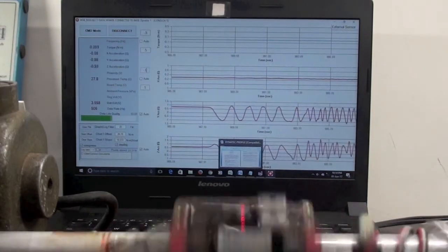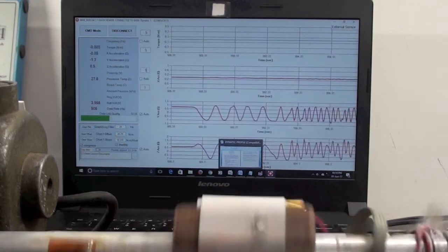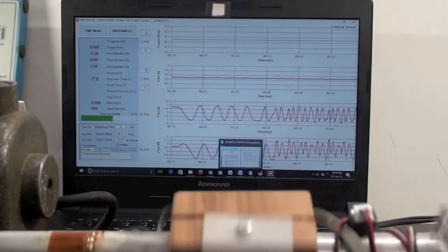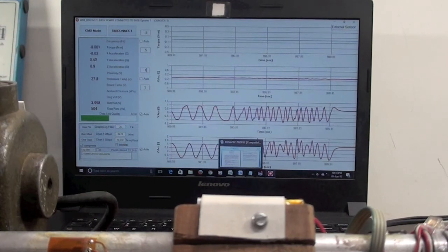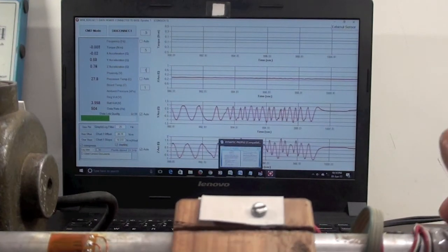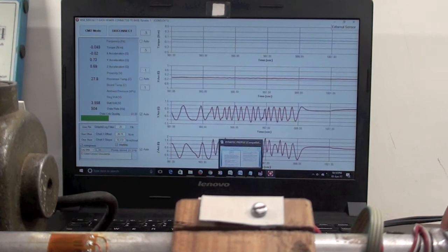The first graph in blue shows torque. Since the bar is rotating freely, there is no torque. Also, there is no axial moment of the bar, so the torque and axial g-plots remain at zero.